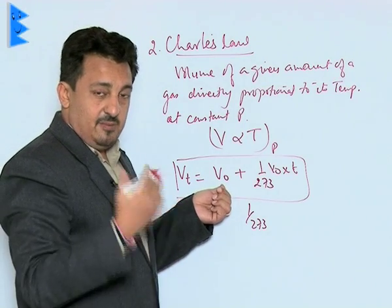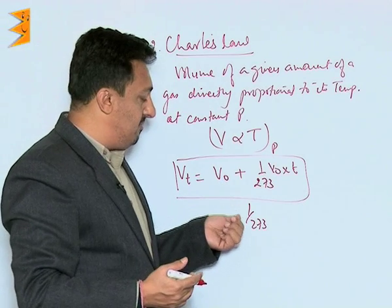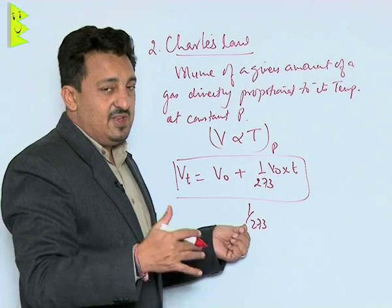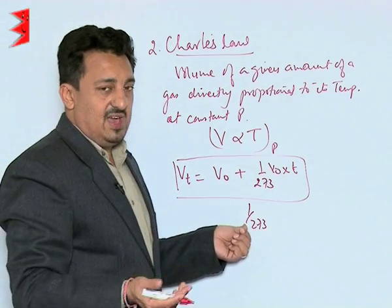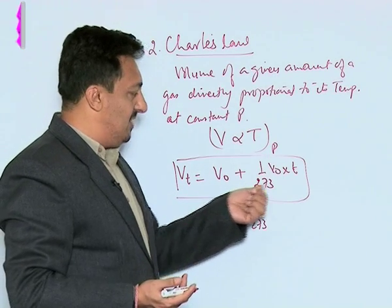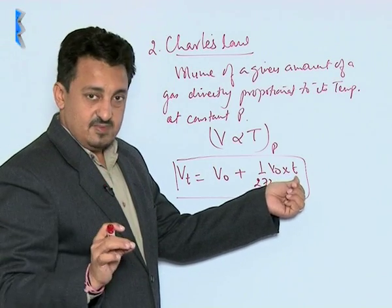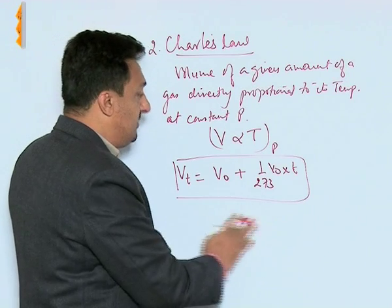The volume of a gas increases or decreases by 1 by 273 times of its volume at 0 degree Celsius with every degree Celsius change in temperature. So volume of a gas at any temperature Vt will be equal to what it was at 0 degree Celsius plus whatever increase has taken place. From this formula we can easily derive the relationship.